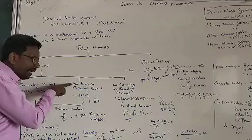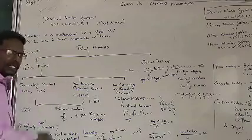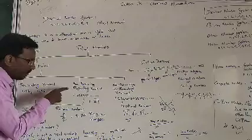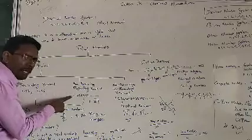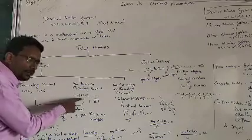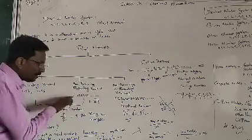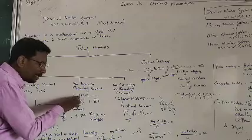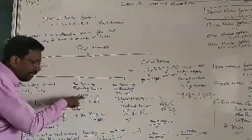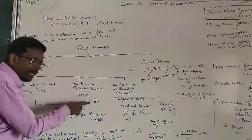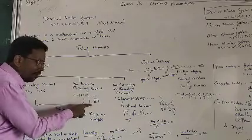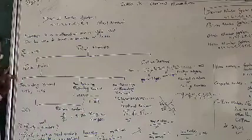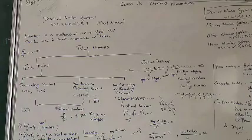In non-terminating repeating decimals, the example given is 1.232323... — so here the digits 2 and 3 are repeating. This can also be written as 1.23 bar.